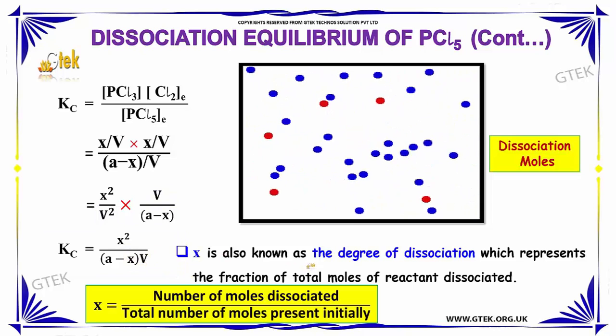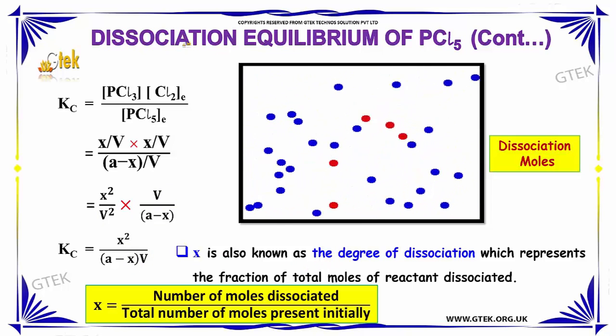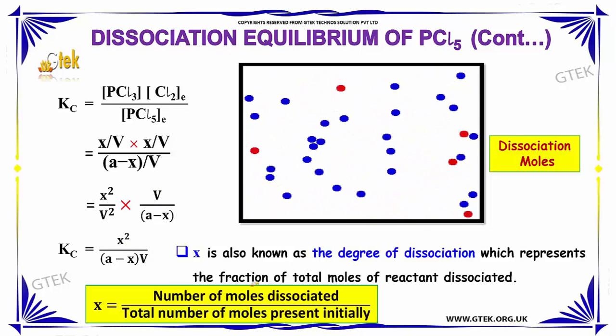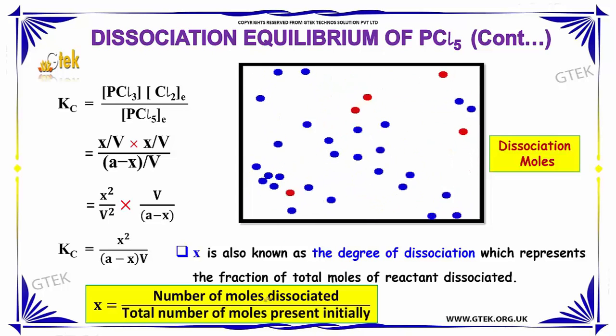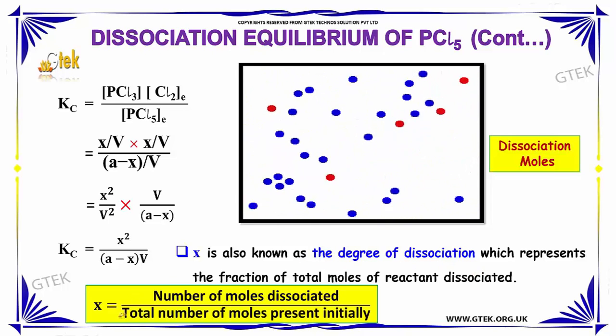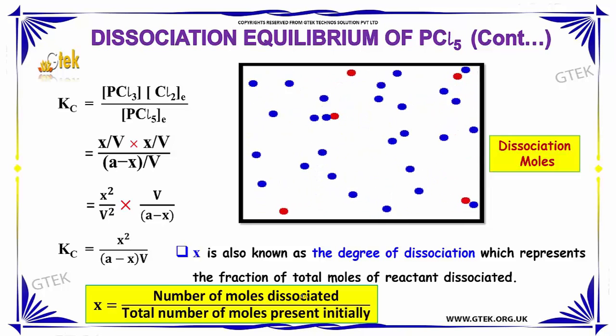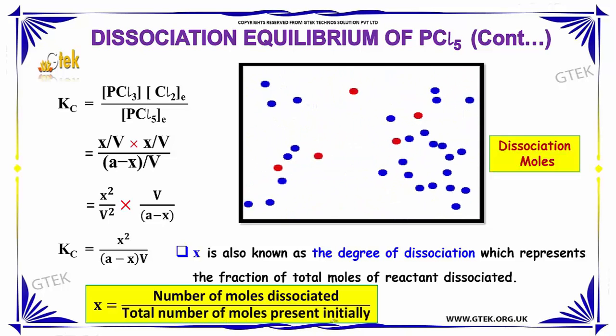Where X is also known as the degree of dissociation, which represents the fraction of total moles of reactant dissociated. X equals number of moles dissociated divided by total number of moles present initially.